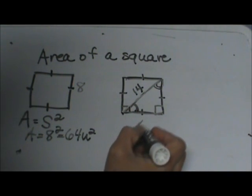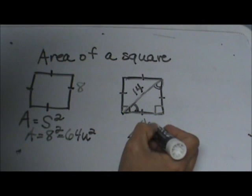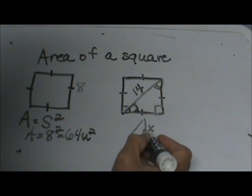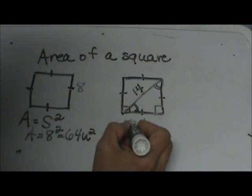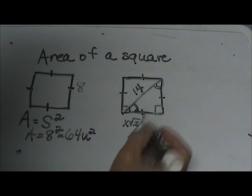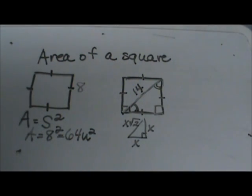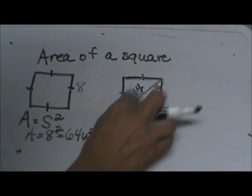So the rule for our 45-45-90 is x, x for each leg, and then x root 2 for the hypotenuse, which is the diagonal of the triangle of the square.